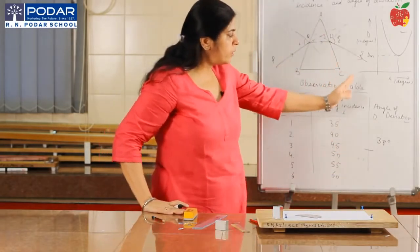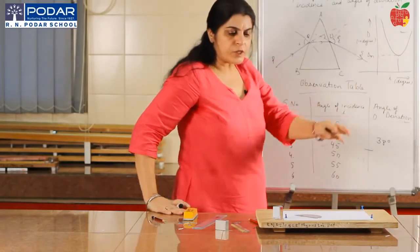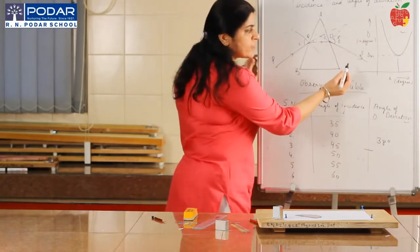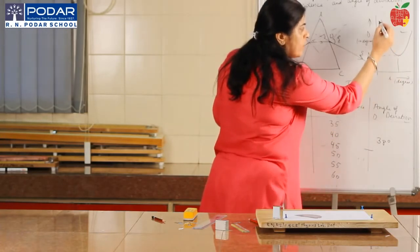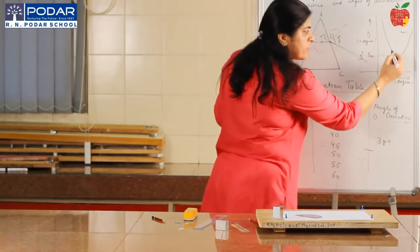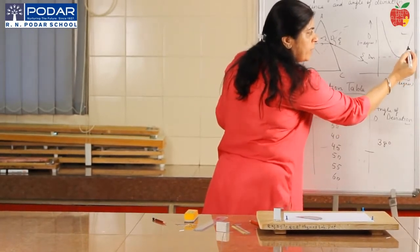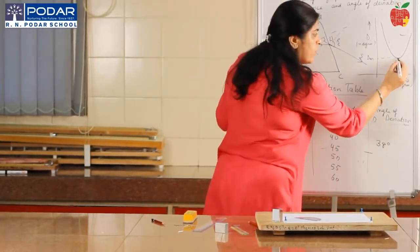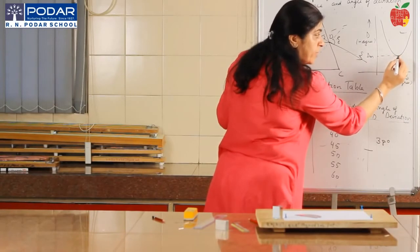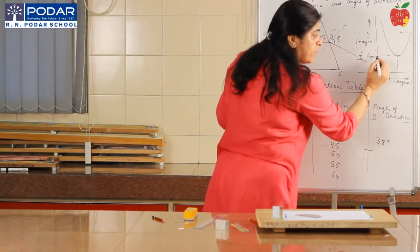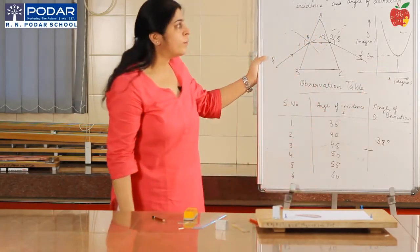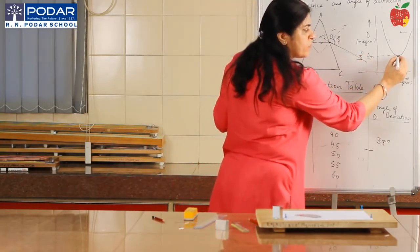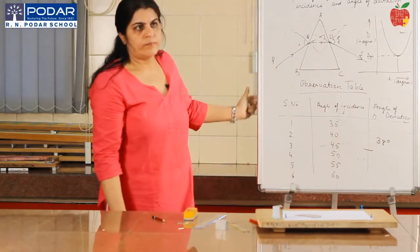Now plot the graph between angle of incidence and angle of deviation from your six observations. You will get a curve showing that the angle of deviation decreases as the angle of incidence increases, reaches a minimum, and then increases again. The angle of incidence at which the angle of deviation becomes minimum is called the angle of minimum deviation. From the graph, identify when the angle of deviation becomes minimum — that is the value you need to find.